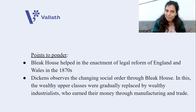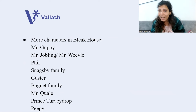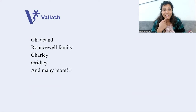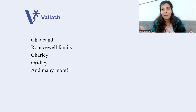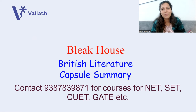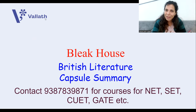That concludes Bleak House. The novel summary has gone quite long — do read the full notes when you are free. Other important characters include Guppy, Charley, and the Rouncewell family, who take care of Sir Leicester when his wife runs away. Bleak House is a masterpiece by Charles Dickens. I hope you enjoyed the novel. Drop a comment if you did. This is Heena from Team Wallet — take very good care of yourself. Bye bye.